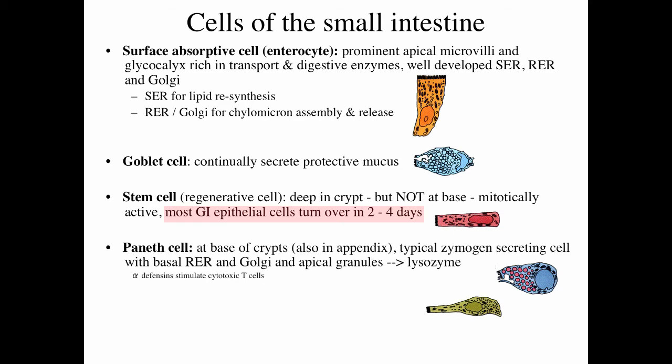Paneth cells are at the absolute base of the crypts of Lieberkühn in the small intestine. You see Paneth cells in the appendix in humans, but interestingly not in the large intestine. These are typical zymogen-secreting cells with a basal rough ER and Golgi and apical secretory granules. These cells secrete lysozyme and alpha-defensins; the alpha-defensins stimulate cytotoxic T cells, and lysozyme itself is an antibacterial substance.